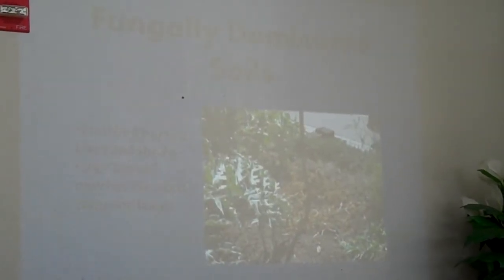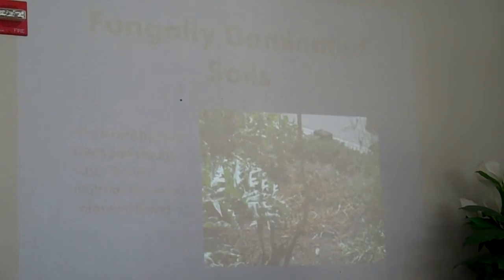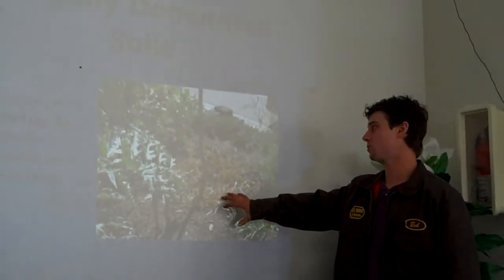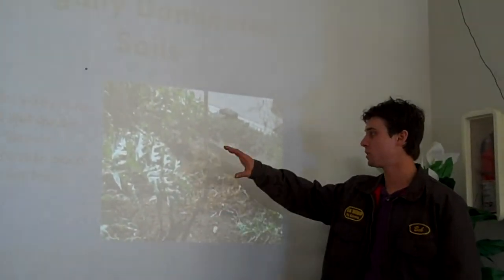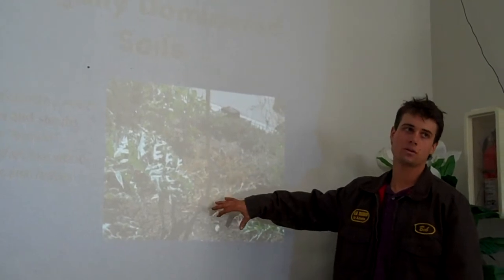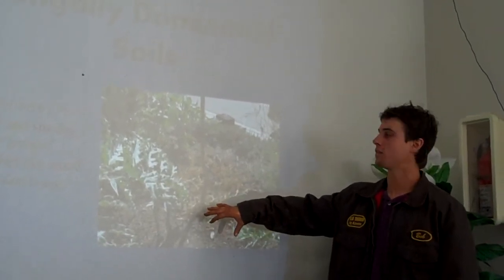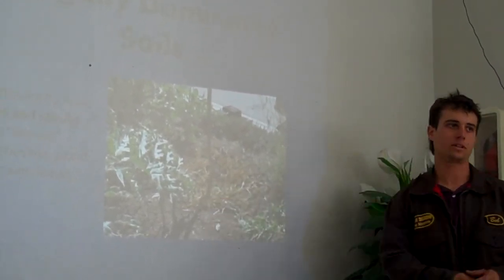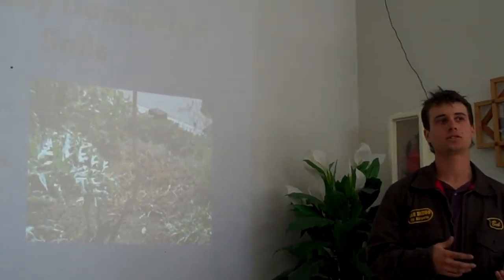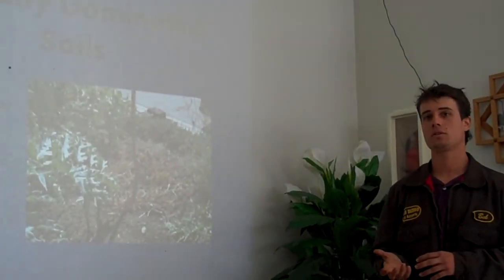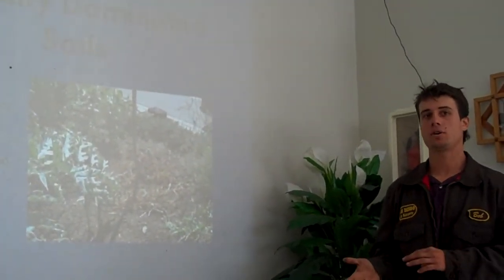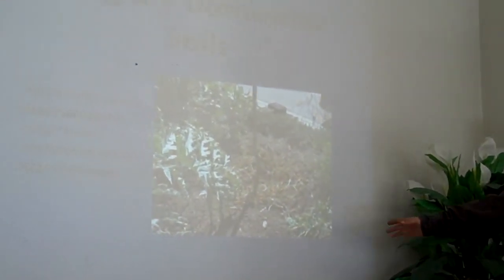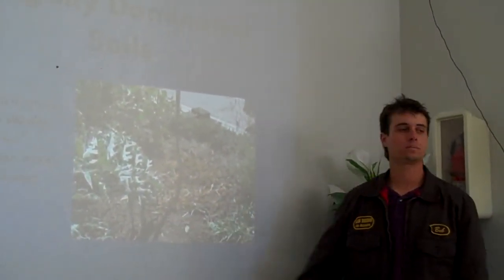This is a picture of a tree where we had a cover crop that was actually a mix of legumes and grasses, but we just chopped it up and let it dry out. Now it's more of a brown mulch that's very dry and that's going to favor fungal decay. There's also a bunch of wood chips around this as well.